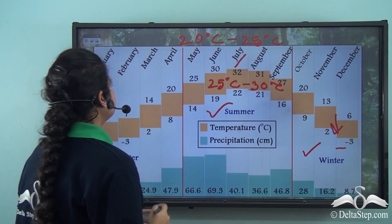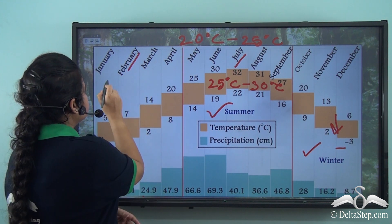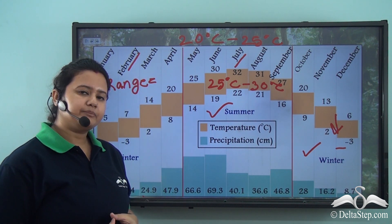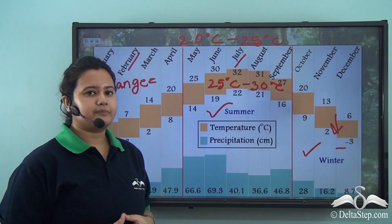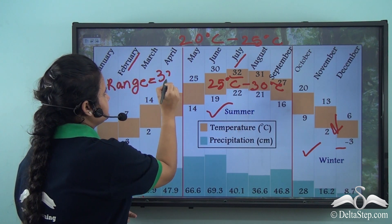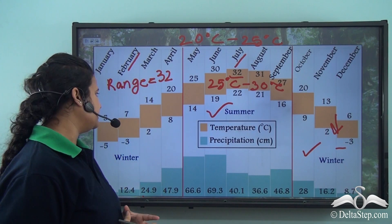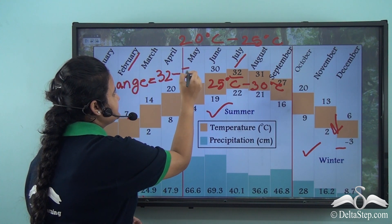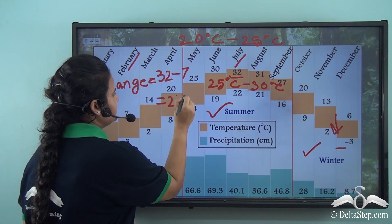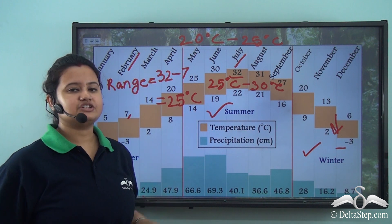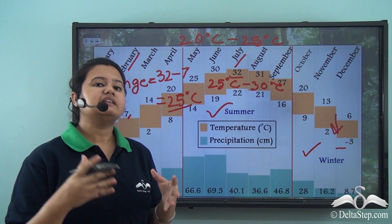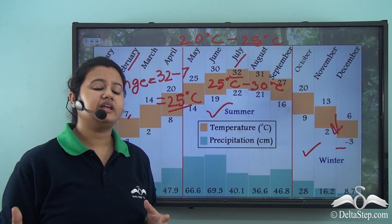To calculate the mean annual range of temperature, we select a summer month — say July — and a winter month — say February. The maximum temperature for July is 32°C and the minimum temperature for February is 7°C. So 32 minus 7 equals 25 degrees Celsius, which is the mean annual range of temperature. This confirms that temperate grasslands have very high temperature variation.